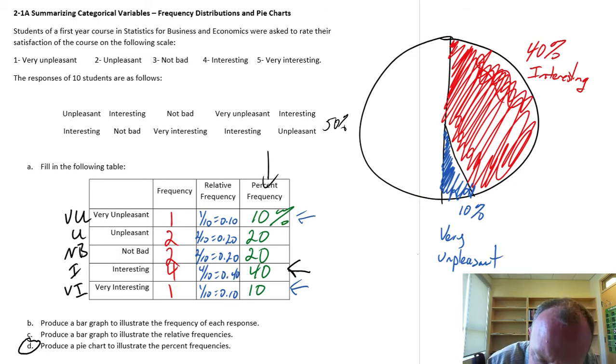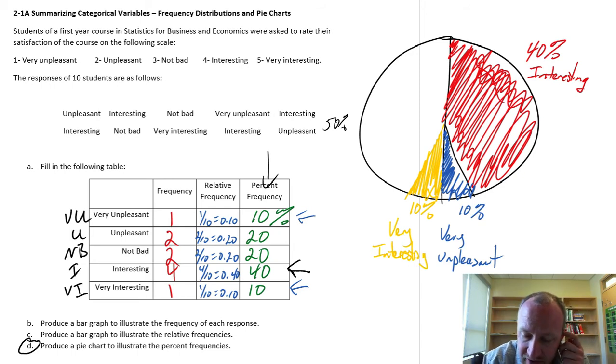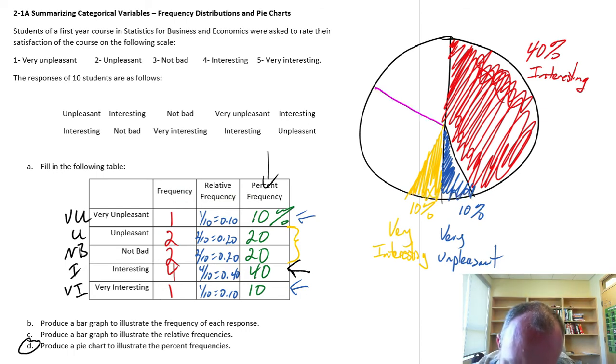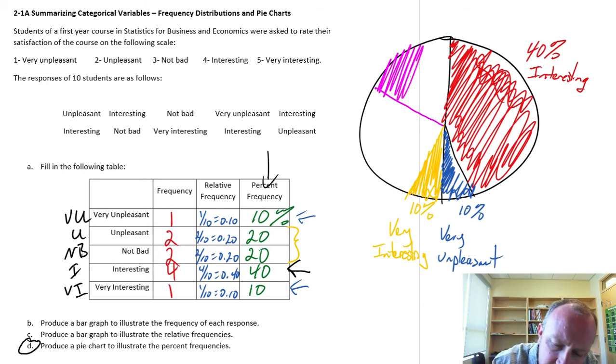And then I have also 10 percent found it to be very interesting. So if I just copy roughly that same size, that same area, here's the other 10 percent who found it to be very interesting. And then what I have left here in this white space, that's still 40 percent of my circle. And what's left are these two values here, 20 percent each. So I can quite simply just divide what's left roughly in half, say something like this.